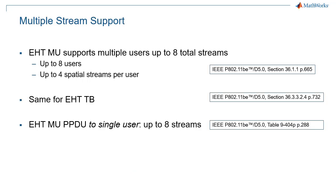802.11be supports multiple space-time streams in a similar fashion as 802.11ax or 802.11ac. Up to 8 users with a maximum of 8 space-time streams, and each user has a maximum of 4 space-time streams in a multi-user scenario. When transmitting to a single user, 8 space-time streams can be sent to that one user.